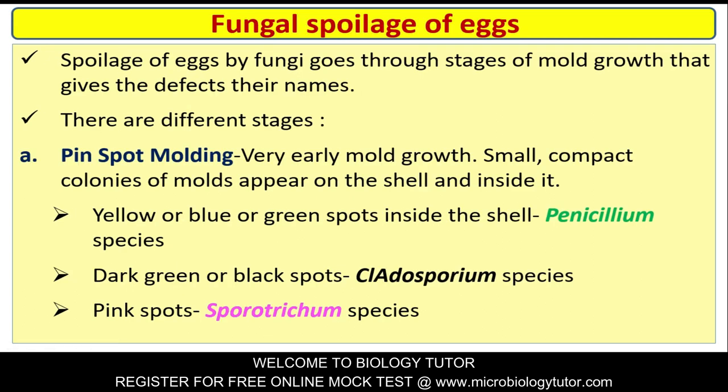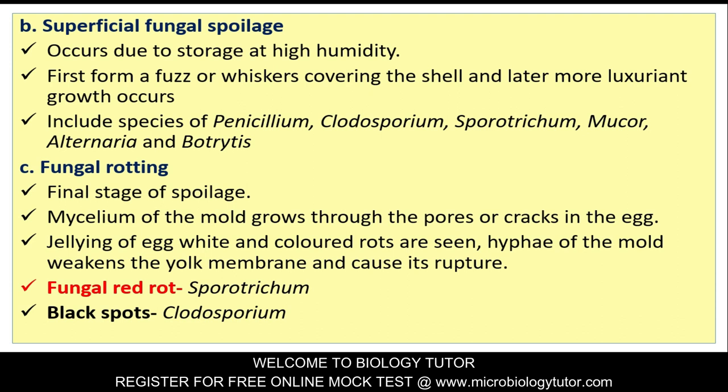Fungal spoilage of eggs: Spoilage by fungi goes through stages of mold growth. Pink spot: Very early mold growth - small compact colonies of molds appear on the shell and inside. Yellow, blue, or green spots inside the shell are caused by Penicillium species. Dark green or black spots are caused by Cladosporium species. Pink spots are caused by Sporotrichum species. Superficial fungal spoilage occurs due to storage at high humidity - first forming fuzz or whiskers covering the shell.